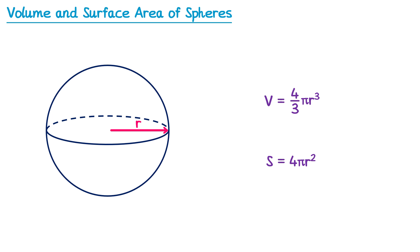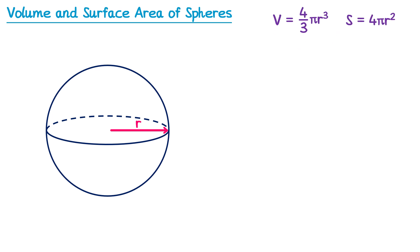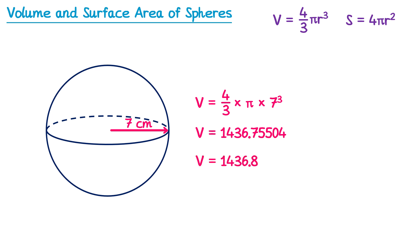Let's practice using these formulas to find the volume and surface area of a sphere which has a radius of 7cm. We'll start with the volume: volume equals 4/3 multiplied by π, multiplied by r³, where r is 7, so 7 cubed. Type this into a calculator and, rounding to one decimal place, the answer is 1436.8. Since this is a volume, the units will be centimeters cubed.